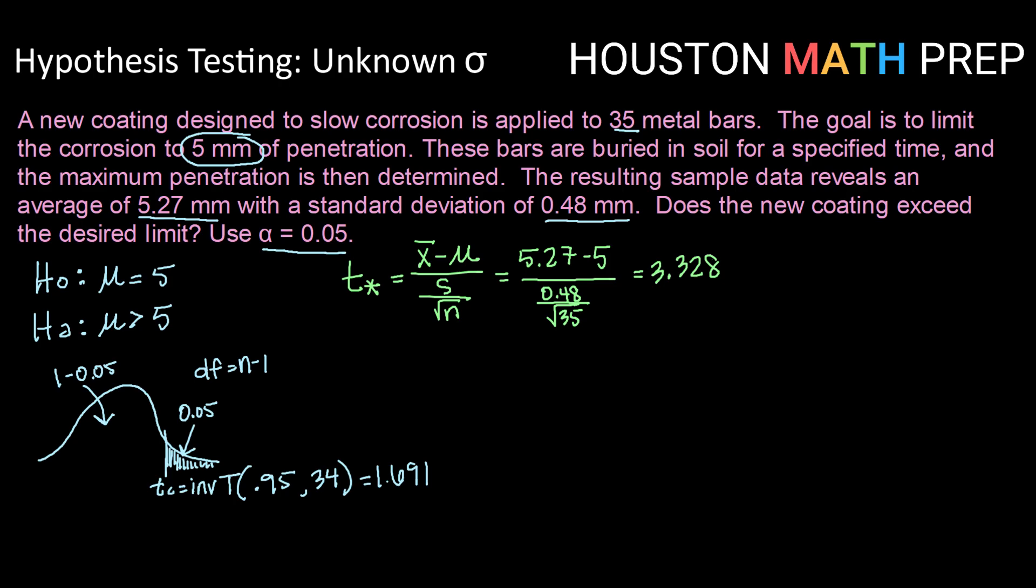So 3.328 is definitely in our rejection region. It is definitely higher than 1.691. So that means we will reject our null hypothesis, and so what we can say is that there is sufficient evidence or there is enough evidence to reject the null hypothesis